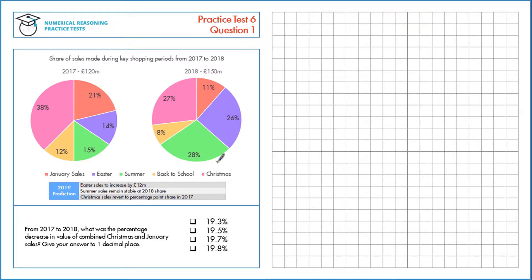So first in 2017, Christmas and January sales are these two regions here. So combined, that's a total of 38% plus 21%, which is a total of 59%.